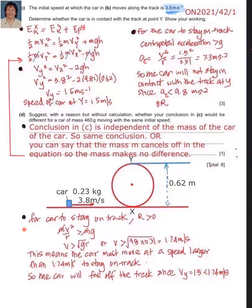In part D, suggest with a reason but without calculation whether the conclusion in C would be different for a car of mass 160 grams moving at the same initial speed. The conclusion in C is independent of the mass of the car, so the conclusion is the same — one mark. The mass M cancels out in the equation, so the mass makes no difference to the conclusion.